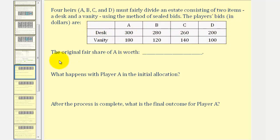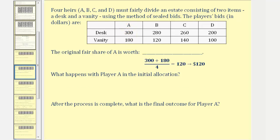Remember, to find the fair share for any player, we sum their bids and divide by the number of players. So for player A's fair share, we'd have 300 plus 180 divided by four, or $120.